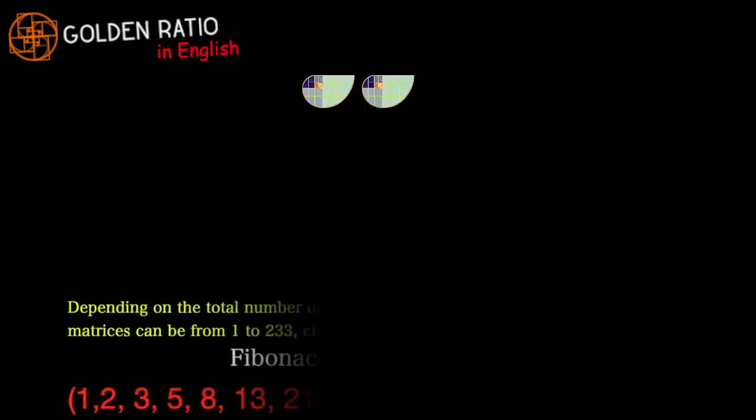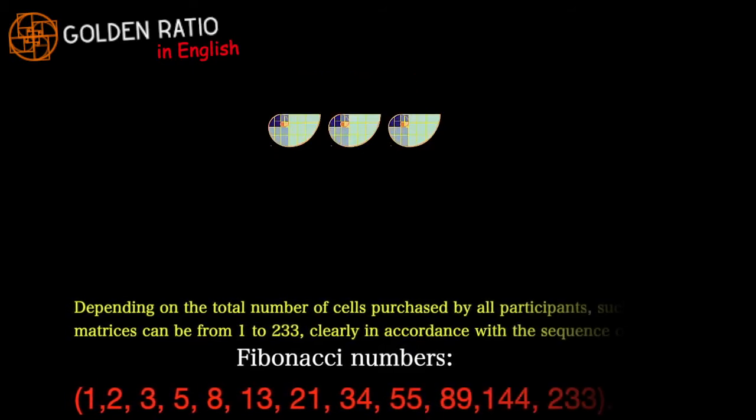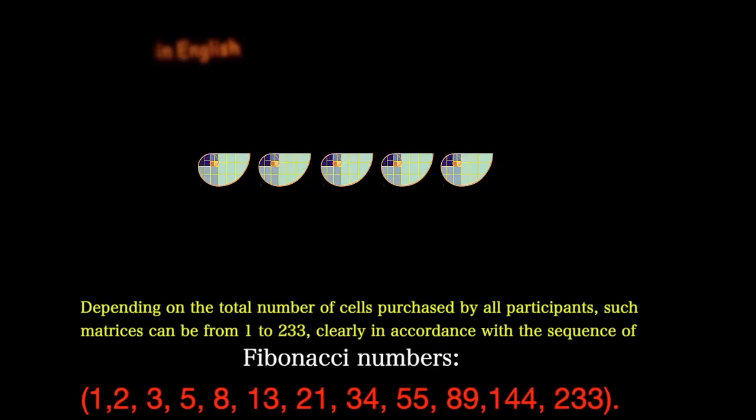Depending on the total number of cells purchased by all participants, matrices can be divided from 3 to 5, from 5 to 8, then to 13, 21, and up to 233 equal matrices. All of them clearly in accordance with the sequence of Fibonacci numbers. The final stage of the division is the formation of 233 X2 matrices, which are then divided into two blocks.